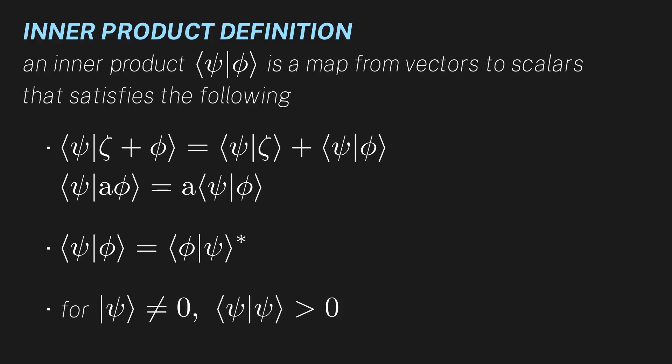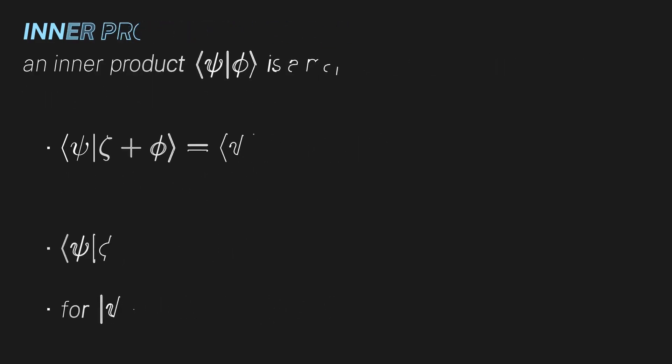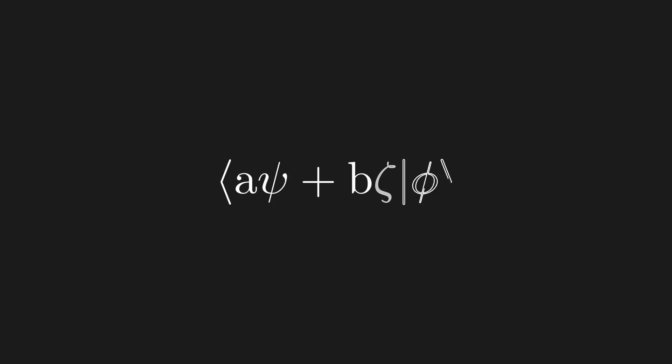Do you now see how these conditions are just the dot product, with a few extra rules to make sure we can still define length? Hopefully the inner product is not so mysterious anymore. Now, what if we had a linear combination on the other side of the inner product? Well, we can just apply our current rules.